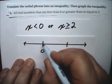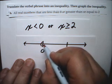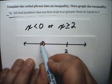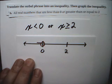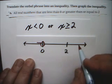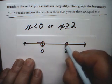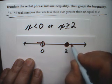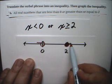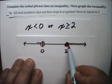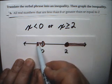So X is less than 0 is an open circle on the 0, and less than 0 is everything this way. X is greater than or equal to 2, that's a closed circle on the 2, and everything this way. So this graph looks like this.